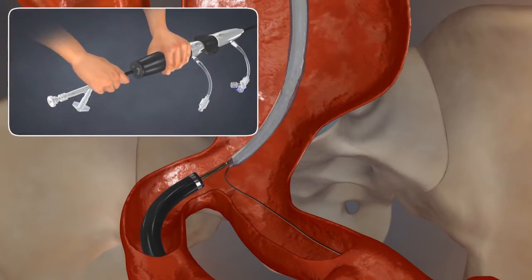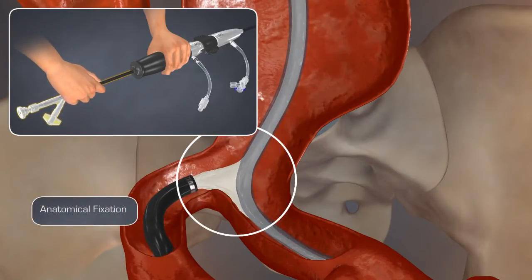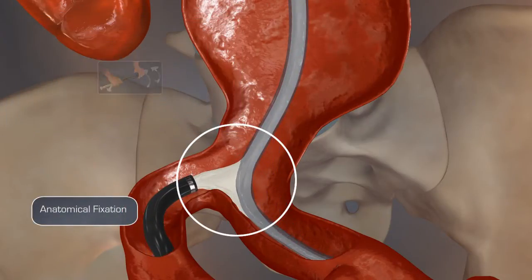Pin the delivery system handle and pull back on the inner core. This motion seats the bifurcated stent graft on the native aortic bifurcation.